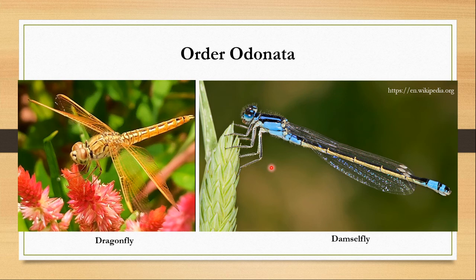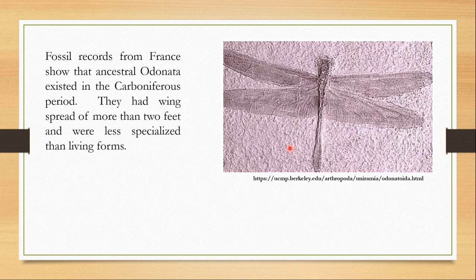In my last video, I had talked about the characters of order Zygentoma which included primitive insects. Insects of order Odonata can also be considered as primitive insects. The fossil records show that ancestral Odonata existed even in the Carboniferous era and the Permian era — they have flown around the world for more than 350 million years, existing even before the dinosaurs.